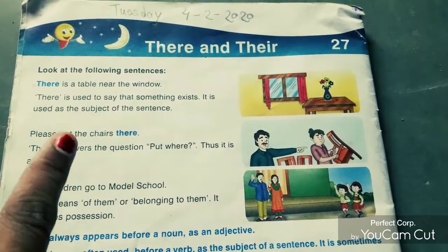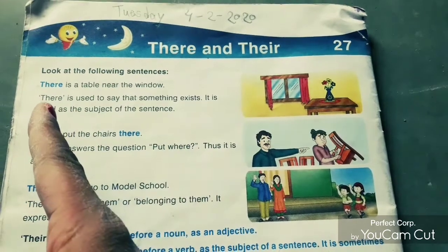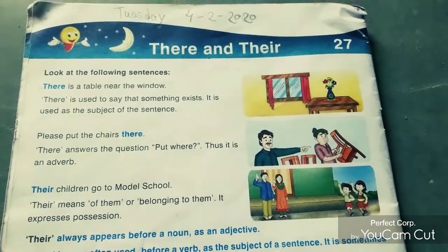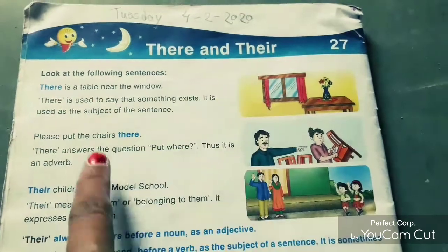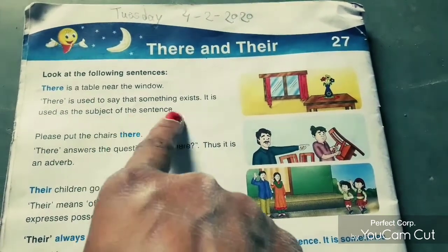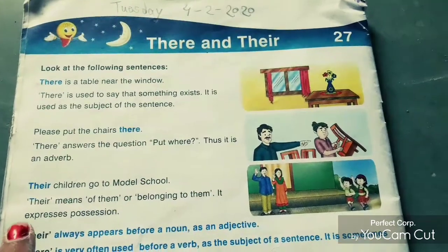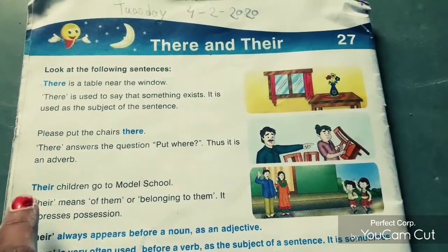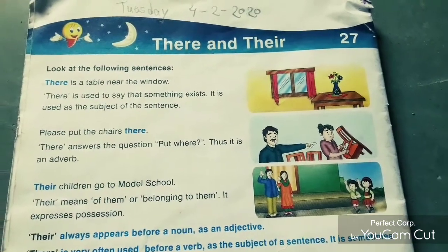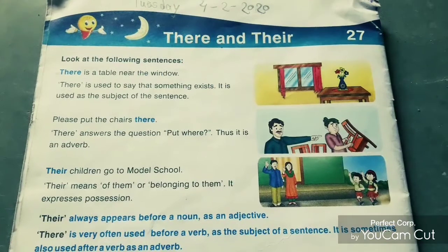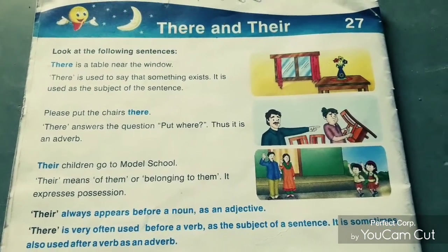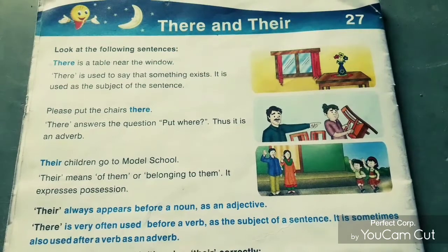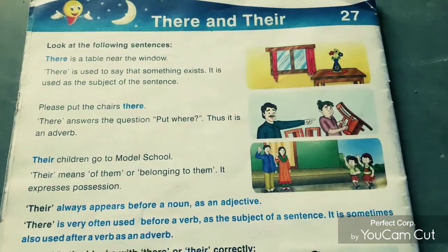Once again to repeat the rules: T-H-E-R-E, 'there,' is used to denote place or sometimes as a subject of the sentence. T-H-E-I-R, 'their,' is used to express or denote our relation with things or with a person. I explained this lesson with the help of the grammar workbook. In the next video, I will give you question and answer related to this lesson with the help of the blackboard.